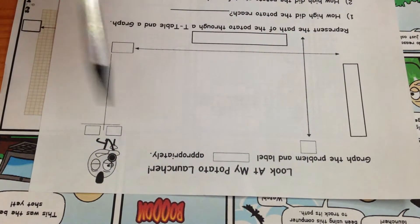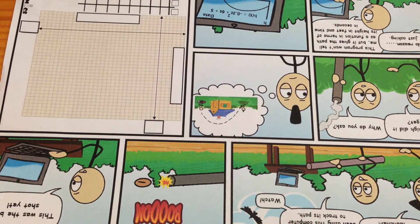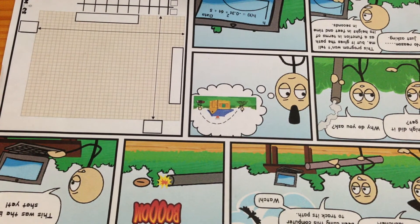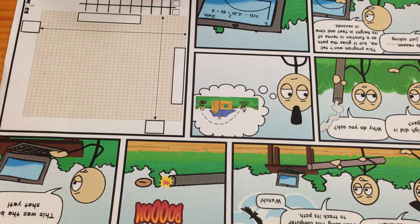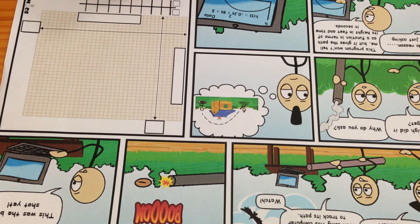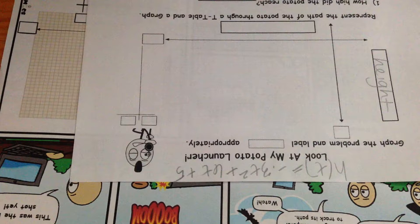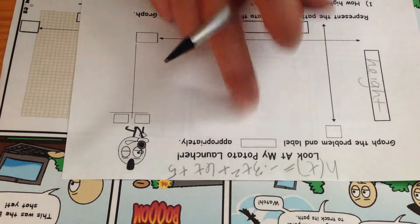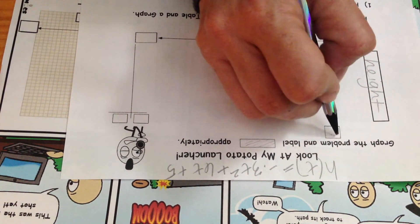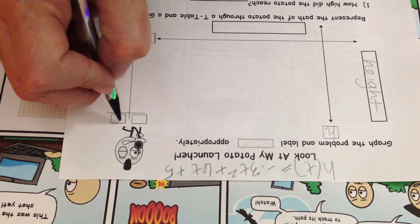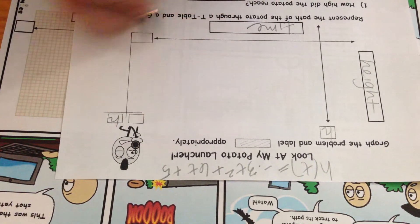Cool, look at my potato launcher. You can find the function to describe the height over time of the launcher in the last frame of the cartoon. So what I need to do is label all the boxes appropriately. This empty box actually doesn't need anything in it. It's pointing out that we should be labeling this as H or Y for our height, and time, T for time.